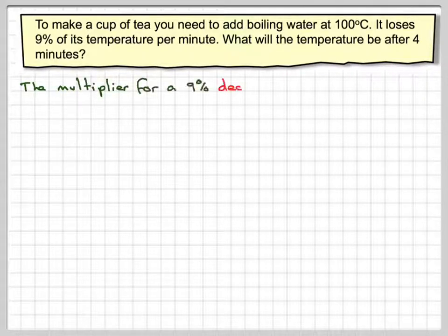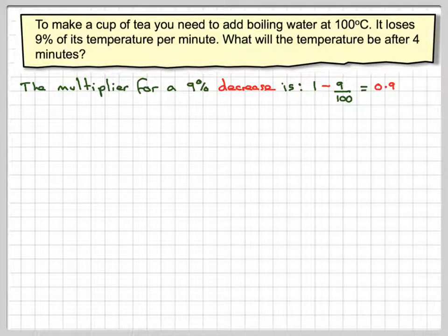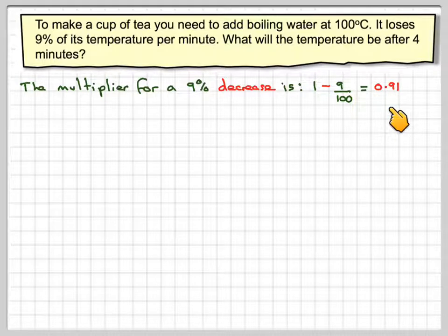The multiplier for a 9% decrease is 1, which is 100%, take away 9 over 100. So what you have left is 0.91 of the original amount after every minute.